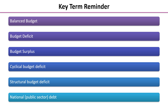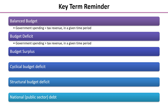Now I'll take you through each of them. Starting with the balanced budget: this is the rare occurrence where government spending is exactly the same as tax revenue in a given time period. For the budget deficit, government spending is greater than tax revenue in that given time period. And for the budget surplus, the other way around, where government spending is actually less than tax revenue in a given time period.